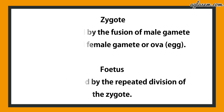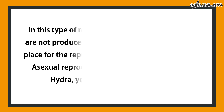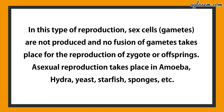Question number 6 says: discuss asexual reproduction and describe two methods of asexual reproduction in animals. The mode of reproduction in which only a single parent is involved is called asexual reproduction. In this type, sex cells (gametes) are not produced and no fusion of gametes takes place for the production of a zygote or offspring. Asexual reproduction takes place in amoeba, hydra, yeast, starfish, etc.